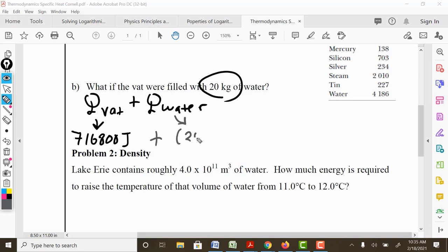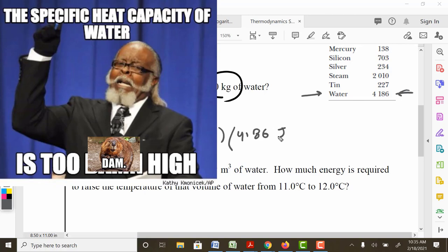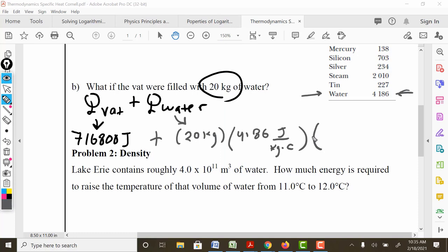But what we need to define now is the heat required to raise the water by that much as well. So we have 20 kilograms of water. The specific heat of water is substantially higher, 4186 joules per kilogram Celsius. And of course, it's going from 10 degrees to 90 degrees, right? And so that's a total of 80 degrees Celsius difference.